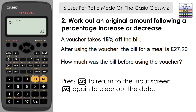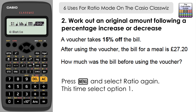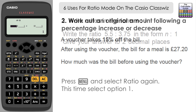I'm going to change the ratio orientation. Press Menu, select ratio again, and choose option one for the following four uses. We can see the unknown is now on the left-hand side of the right-hand ratio.